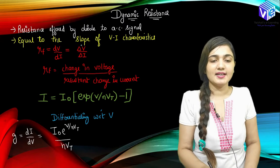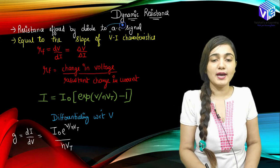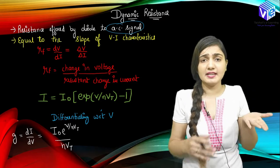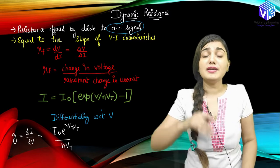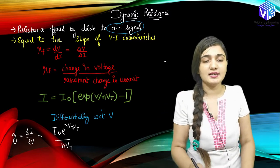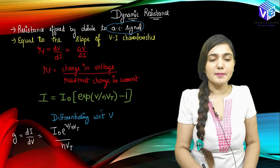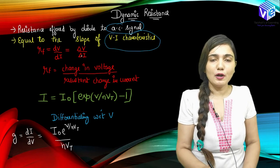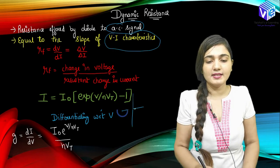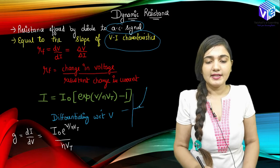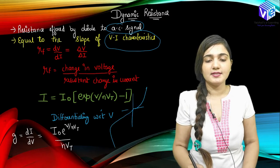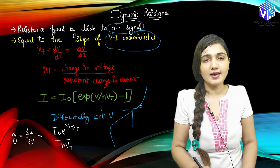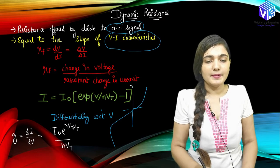Now coming to dynamic resistance — this is the resistance offered by the diode to the AC signal. If instead of a DC signal I supply an AC signal to the diode, it will offer a different resistance to the AC signal, known as dynamic resistance. We can calculate it with the help of the slope of the VI characteristic. In the forward bias the characteristics look like this, and in the reverse bias like this. Finding the slope gives us the AC or dynamic resistance.